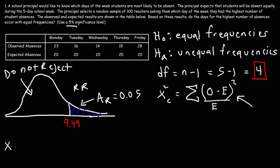So using this formula, here's what we're going to get. So starting with Monday, if we take O subtracted by E, that's 23 minus 20. So that's going to give us 3-squared, divided by the expected value of 20. Next, for Tuesday, O minus E, that's 16 minus 20, which is negative 4. But when you square it, it's going to become positive, divided by E, which is 20.